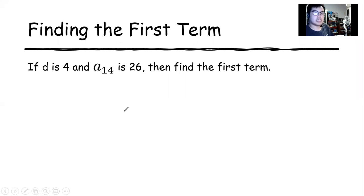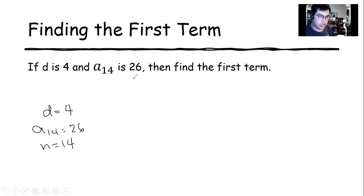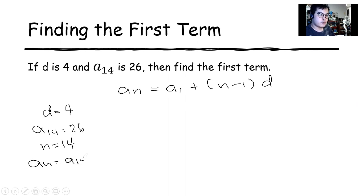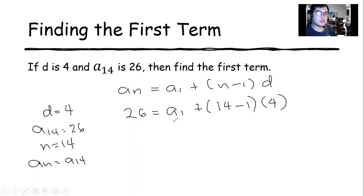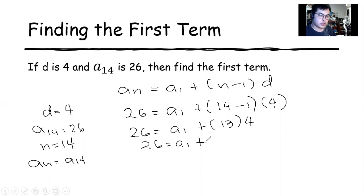Now we're looking for the first term. We state the given: our common difference is 4, our a sub 14 is 26, and our n is 14. We recall the formula of the arithmetic sequence. Our a sub n is a sub 14, which is 26. We don't know the first term yet, so we write a sub 1. Then n minus 1 is 14 minus 1, and our d is 4. Solving inside the parentheses: 13 times 4 is 52.